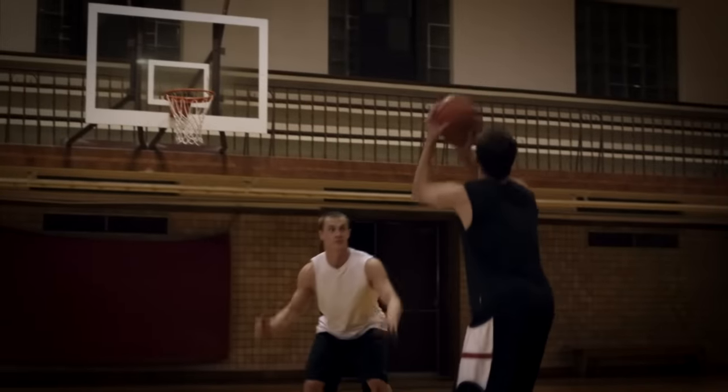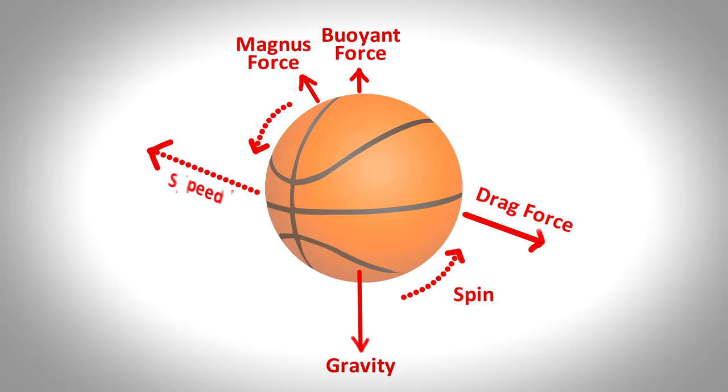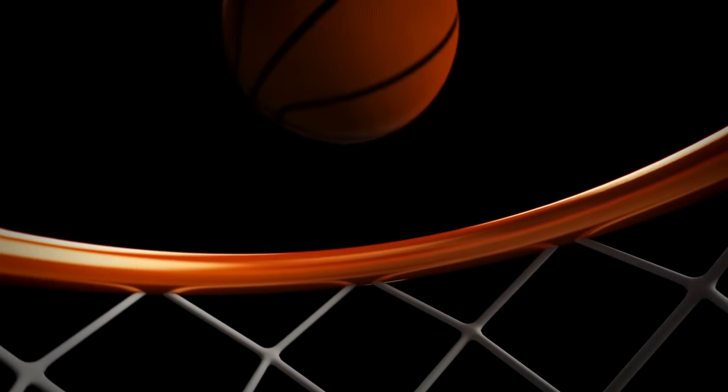If we know the position and motion of a basketball at one instant, and all the forces that act on it, we can work out from the classical laws of motion exactly where it will be at a later time.